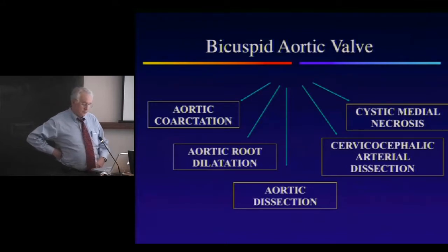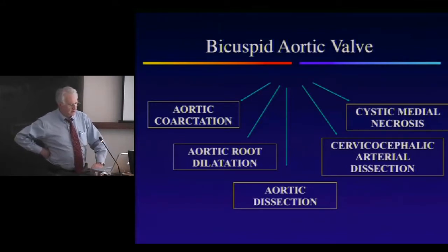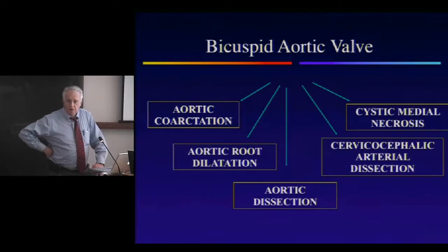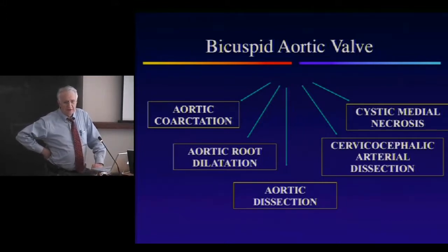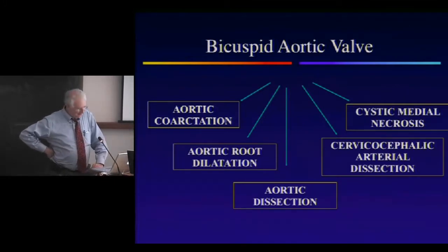Julian Hoffman told me the incidence of bicuspid aortic valve in the population is about two to three per hundred. So in this room, at least one of us probably has a bicuspid aortic valve — and as I've done my own echocardiogram, I know it's not me.